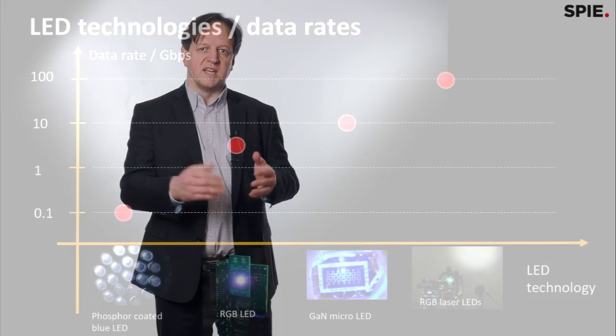Speeds are a very good question. And they are obviously dependent on what kind of LED light source you would be using. So we have the classic phosphorous coated LED, which is a blue LED with a phosphorous coating on top. Then we have the RGB LEDs and then we have micro LEDs and we have lasers.